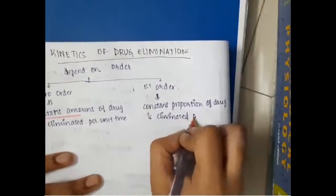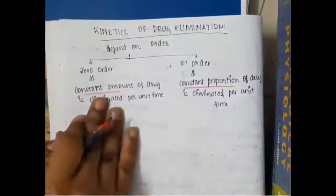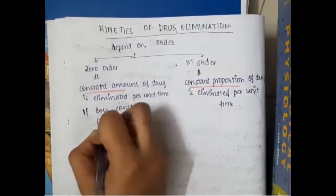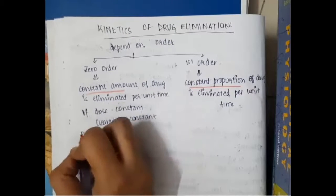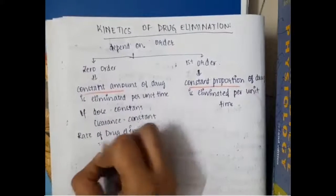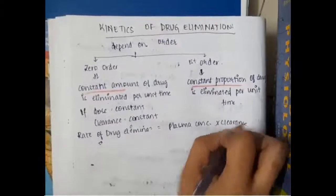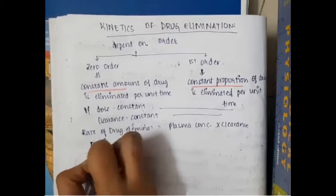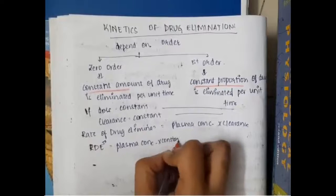In first-order drugs, a constant proportion of drug is eliminated per unit time — that is, some percentage of drug is eliminated per unit time. In both, the formula for rate of drug elimination equals plasma concentration multiplied by clearance.